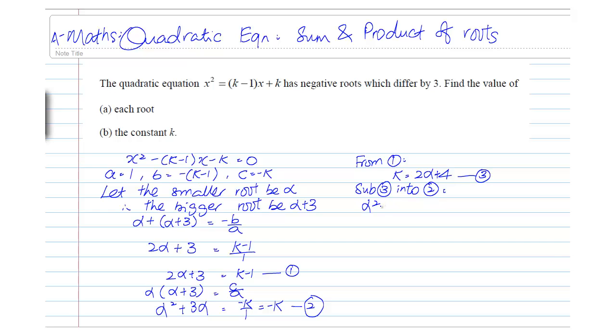I'm going to substitute equation 3 into equation number 2. That will be alpha squared plus 3 alpha equals to negative 2 alpha plus 4.